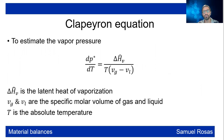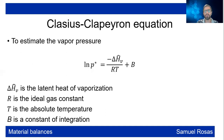To estimate vapor pressure at a certain temperature, you can use the Clapeyron equation — a differential equation that depends on the latent heat of vaporization, the absolute temperature, and the specific molar volume of the gas and liquid. Integrating this gives the Clausius-Clapeyron equation, where the natural logarithm of vapor pressure depends on the latent heat of vaporization, the ideal gas constant, the absolute temperature, and a constant of integration.